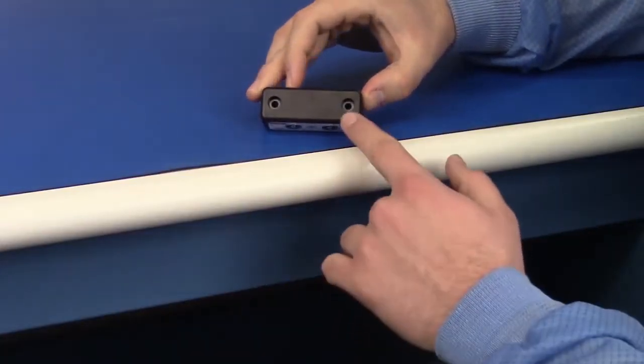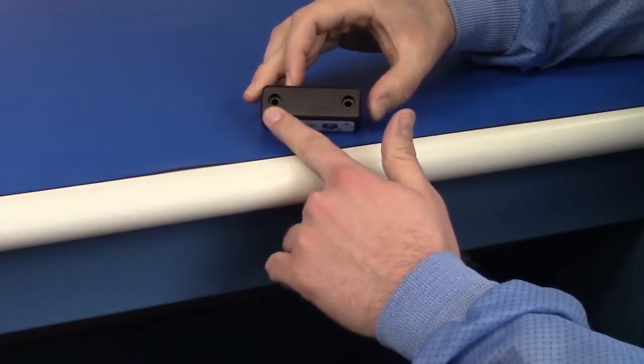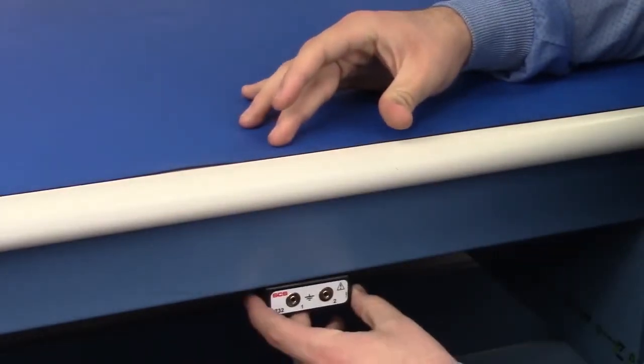The SCS732 Dual Operator Remote has two mounting holes and includes hardware for installations underneath bench tops.